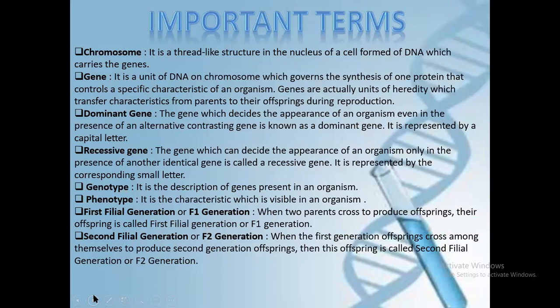Genotype: it is the description of genes present in an organism. Phenotype: it is a characteristic which is visible in an organism. First filial generation or F1 generation: when two parents cross to produce offsprings, their offsprings are called the first filial generation or F1 generation.